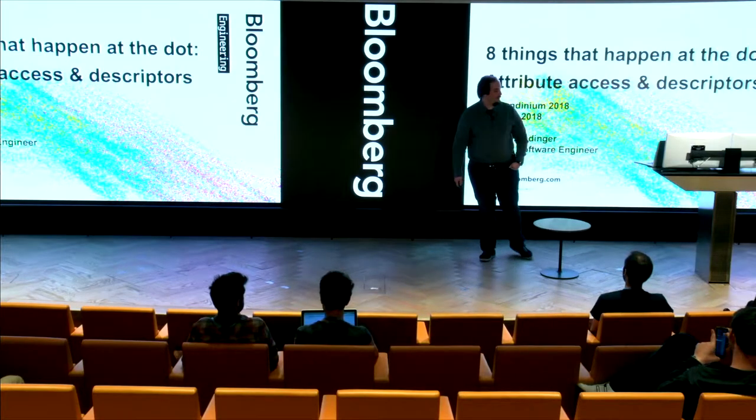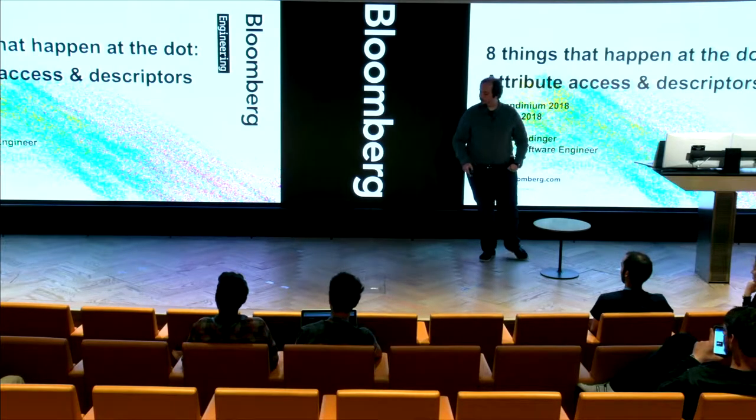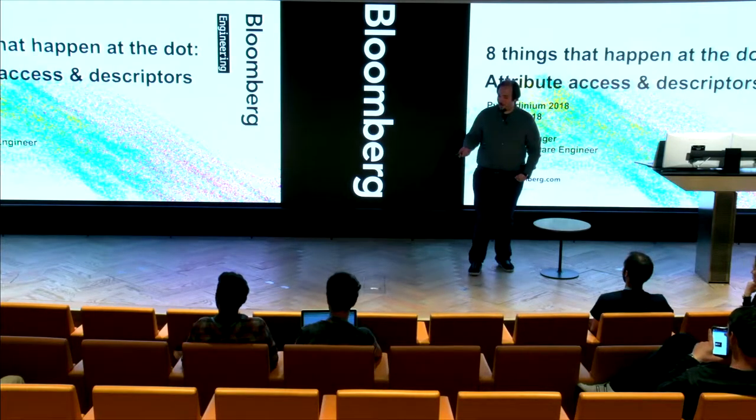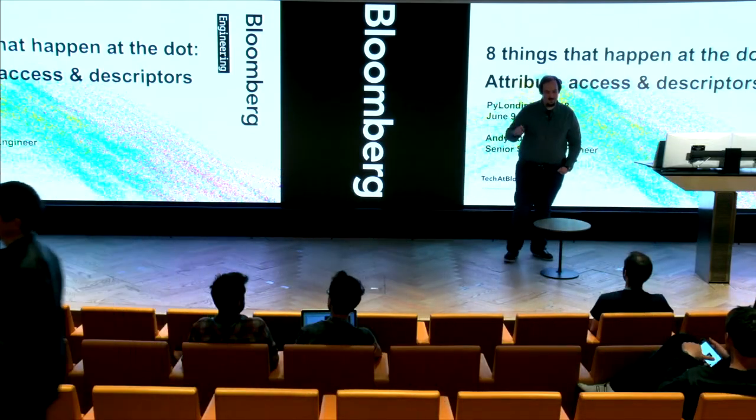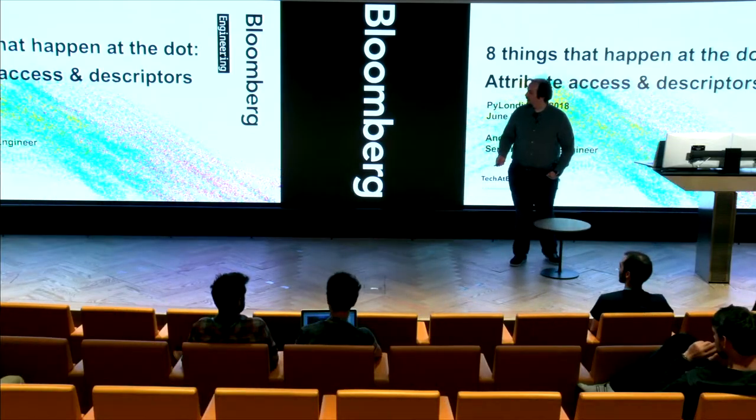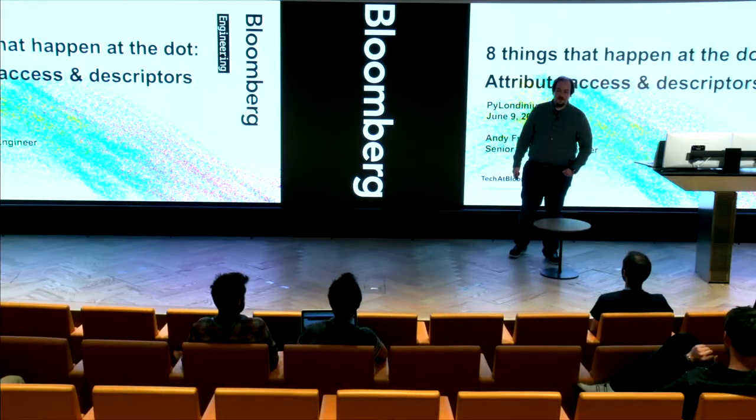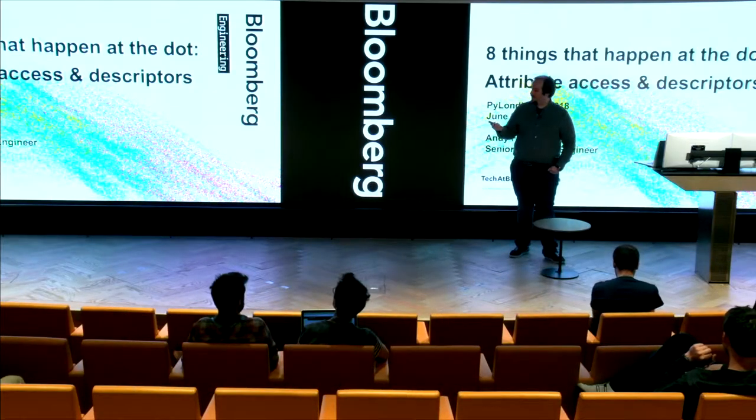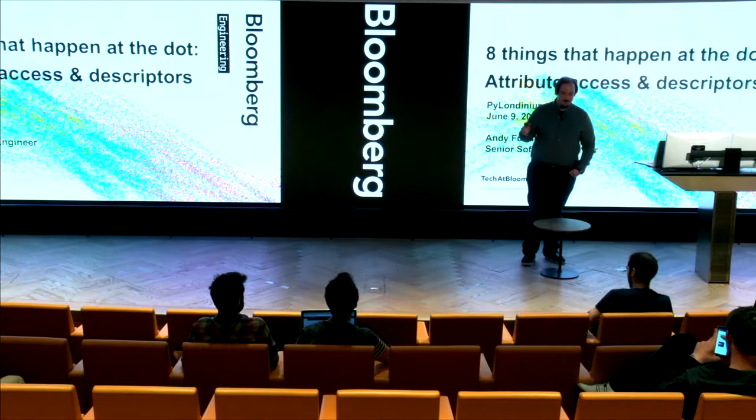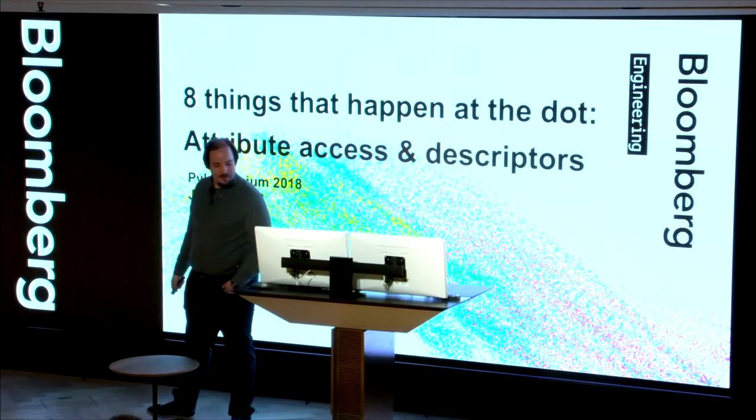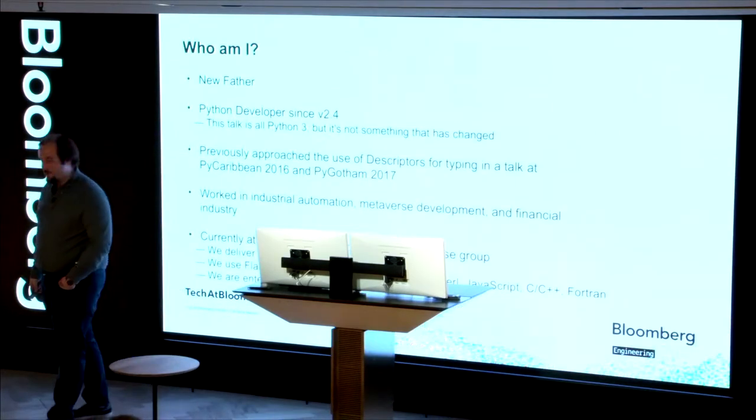So we're going to talk about eight things that happen at the dot. This talk came out of a couple things. One was a discussion I had with Guido, where I said, hey, what in Python is still kind of neat to you that you wrote? And he said, the descriptors are kind of neat. The other one is, this is something I've occasionally asked on interviews and people are not real familiar with what happens here.